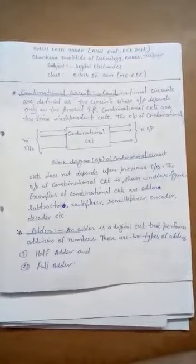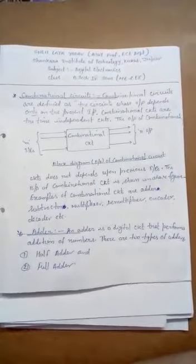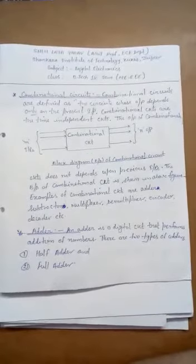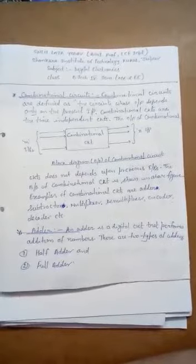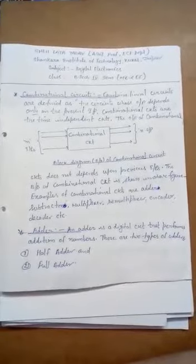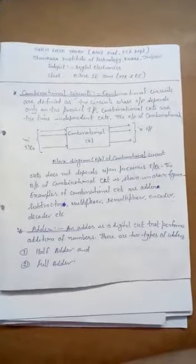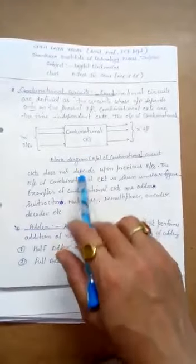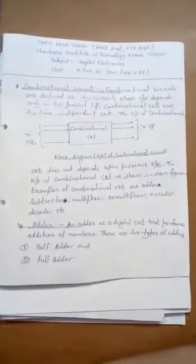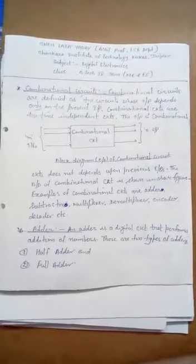Combinational circuits are defined as the circuits whose output does not depend upon previous inputs. The output of combinational circuits depends only on the present inputs. Combinational circuits are time-independent circuits. Examples of combinational circuits are adder, subtractor, multiplexer, demultiplexer, encoder, decoder, etc.